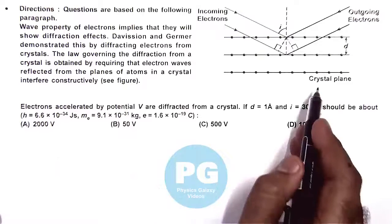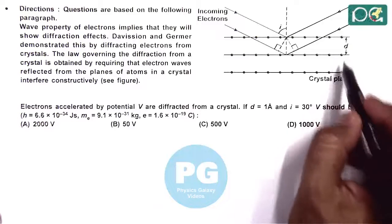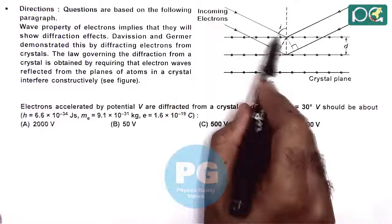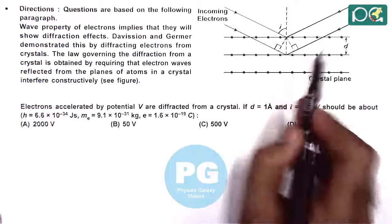Here the figure is shown and in Davison and Germer experiment we already discussed the same. These are the three layers of atoms. One incoming electron wave is reflected from the top layer and then from the bottom layer. We first find out